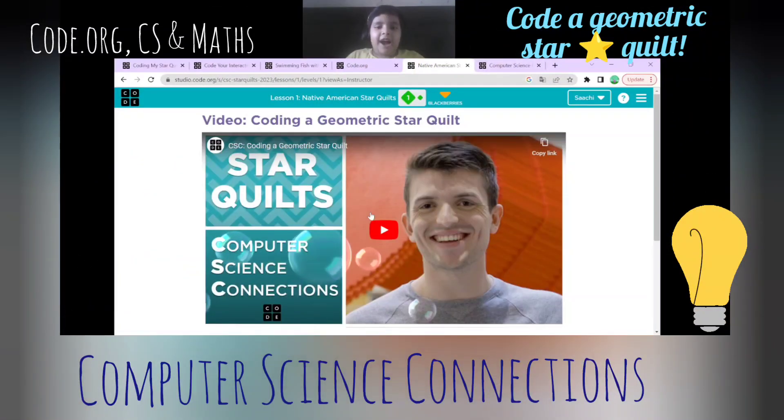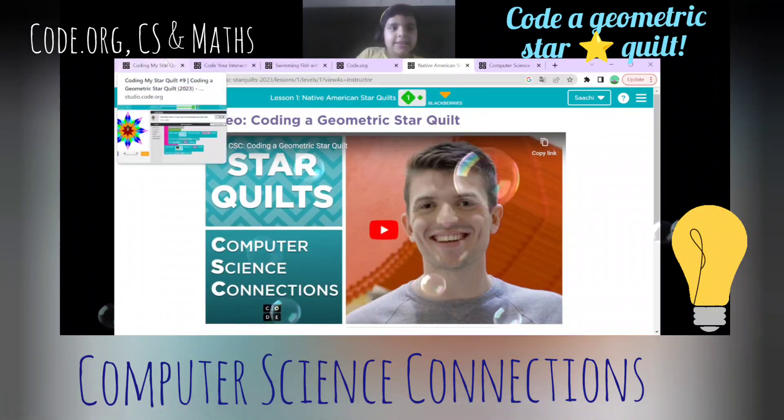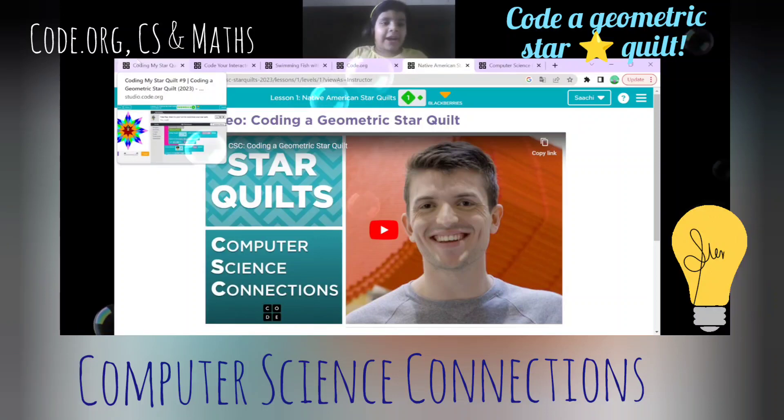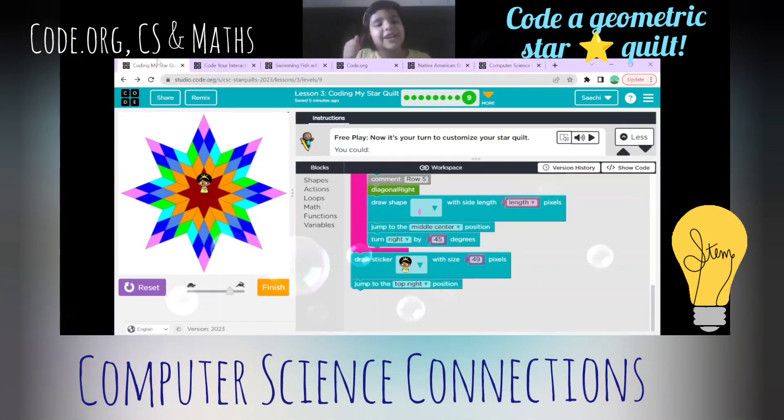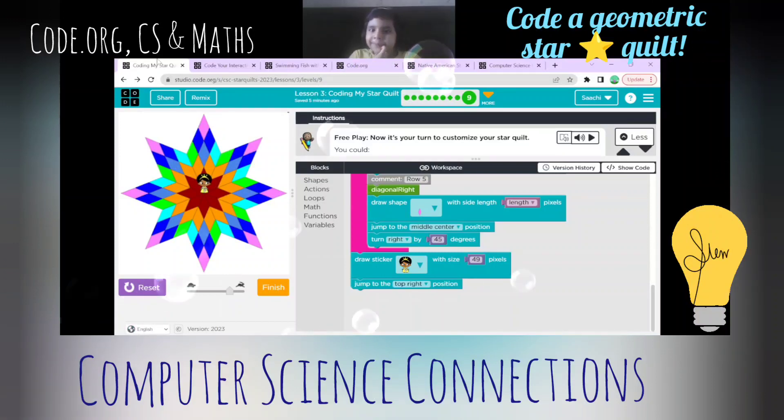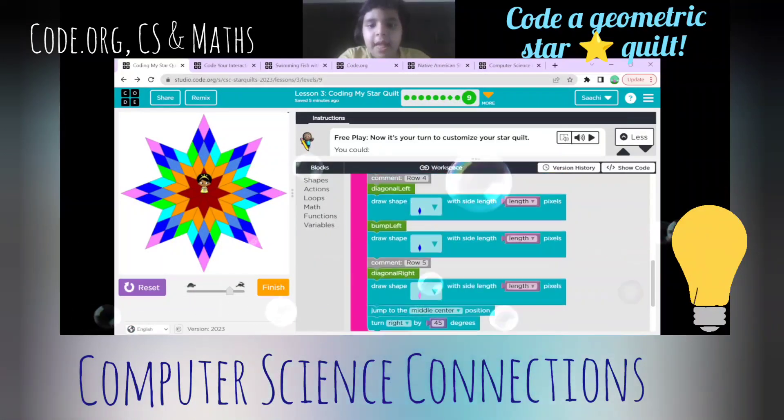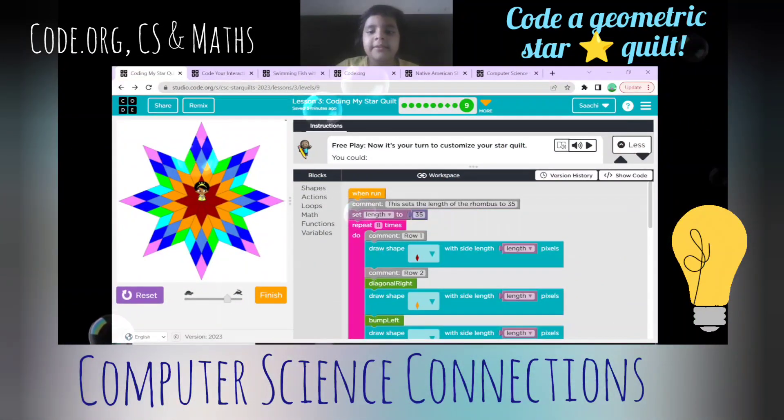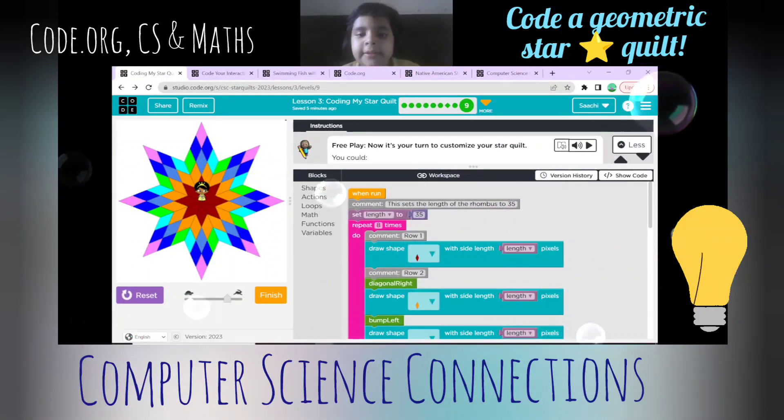If you want to know the history of how star quilt came, watch the video. Let's find out how I made this beautiful rainbow star quilt. So first I have taken the rhombus which sets the length of the rhombus to 35.